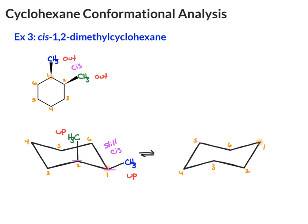Now, after the ring flip, the methyl on carbon-1 goes from equatorial to axial. The methyl group on carbon-2 goes from axial to equatorial. They're both still up. They're both cis.